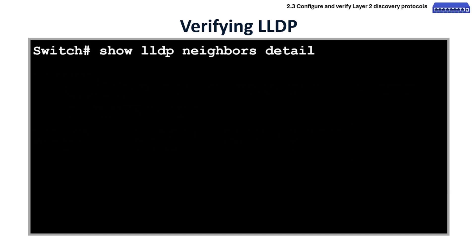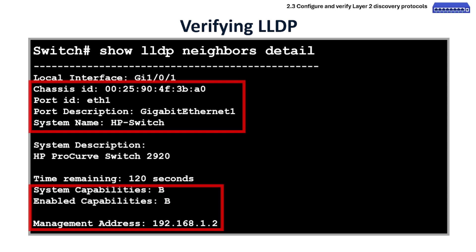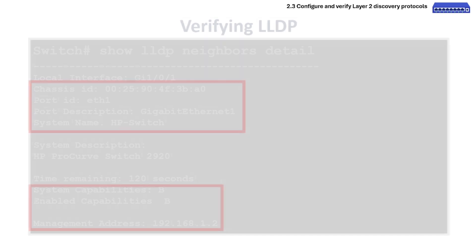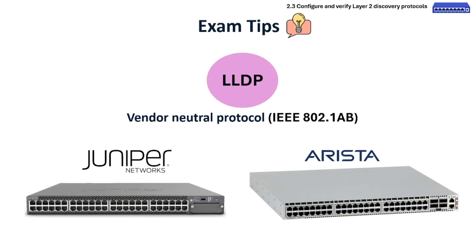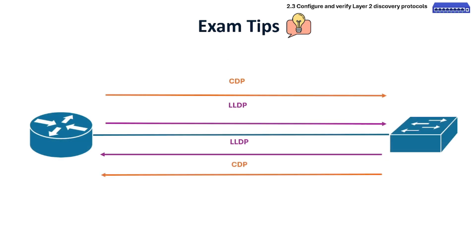The show lldp neighbors detail command gives more information on neighboring devices, including system name or description, chassis ID, port ID or description, management address, and capabilities. LLDP is standards-based and vendor-neutral — use it in multi-vendor networks like HP, Juniper, and more. You won't see LLDP neighbors unless both LLDP transmit and receive are enabled on the interface. You can use both CDP and LLDP protocols, but they don't talk to each other.